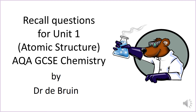This is a revision video for AQA GCSE chemistry or combined science, looking at the very first chemistry unit: atomic structure and the periodic table. In this video we're going to go through the key facts listed in the specification — the things that make up 40% of GCSE science which you need to be able to recall. You can download the questions from the description below, use these to make flashcards or test yourself, and then check the answers using this video.